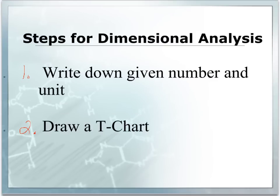Here are the steps for dimensional analysis. Step one, write down the given number and unit. You will always be given a number with a unit to start with. Then in step two, draw a t-chart. And this is what a t-chart looks like. You may have seen them before.